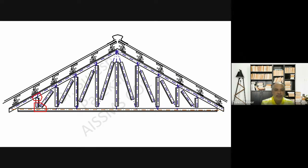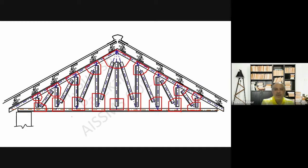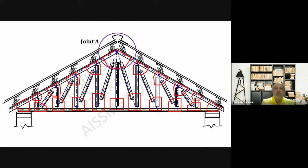Then you go for the gusset plates. While plotting the gusset plate, keep in mind it should be perpendicular to the member — this makes it easy for the joint connection. Likewise, plot a gusset plate at all joints. Then we go for the support: the angle section is made here, and the outstanding members of the angles are connected. In the same way, we have the gusset plate on both sides.